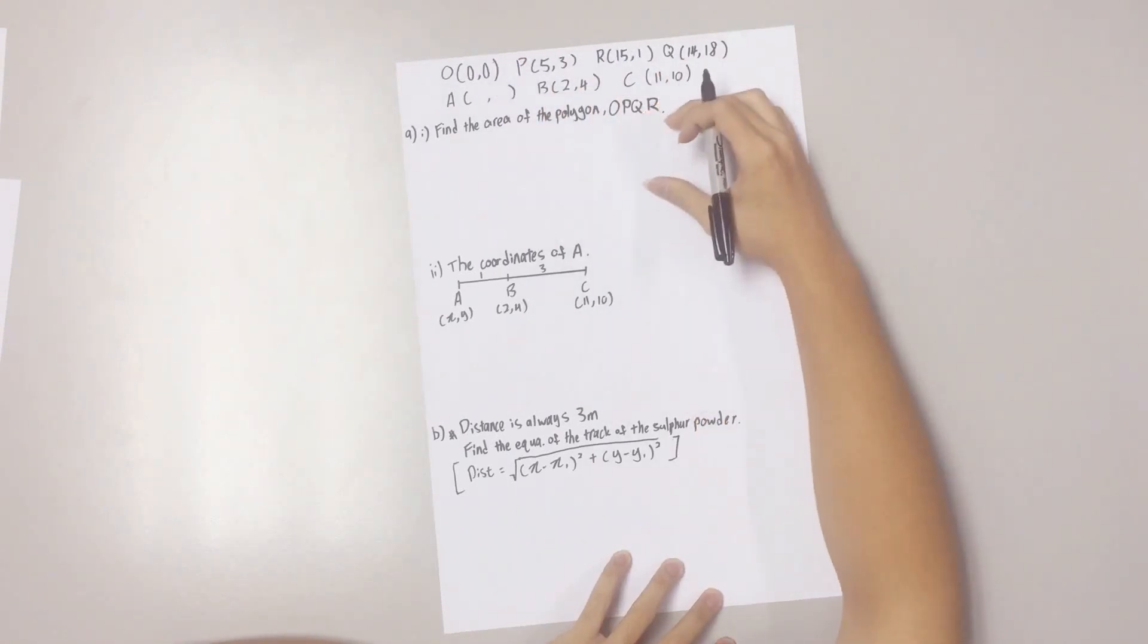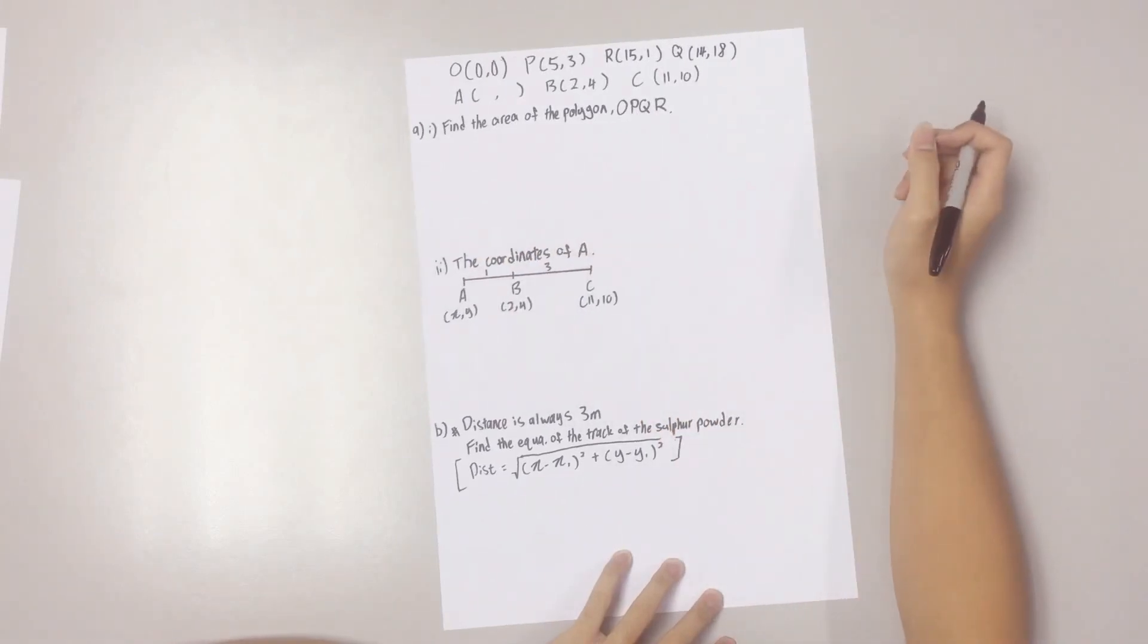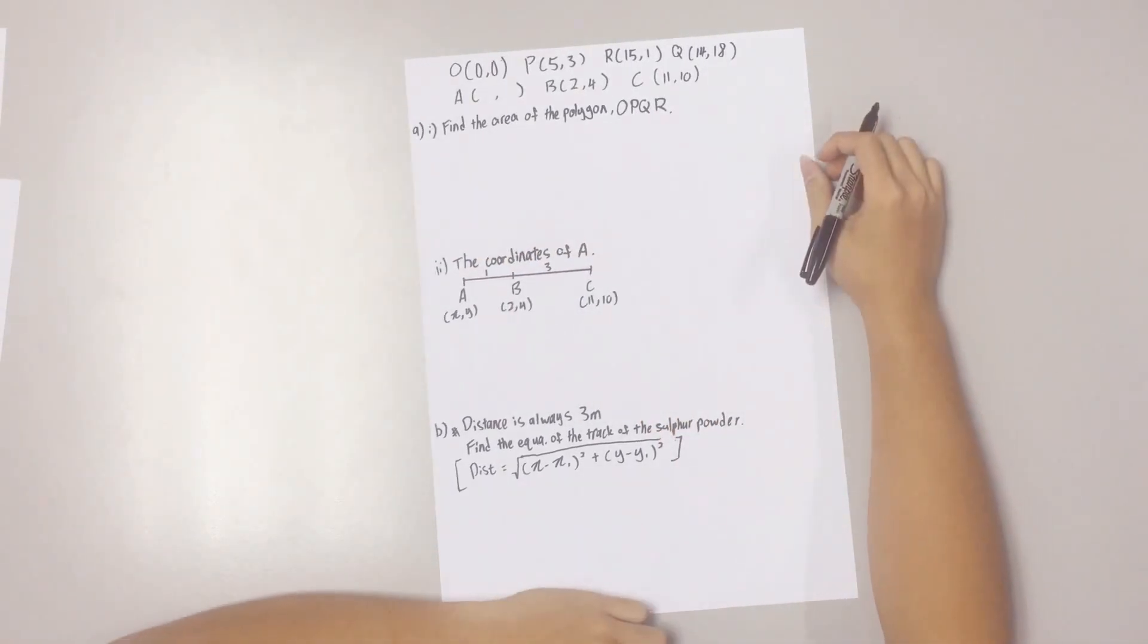Now let's start with question A1. Find the area of the polygon OPQR. According to formula, this is how you find the area of a polygon.